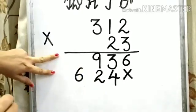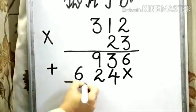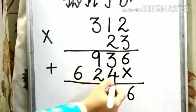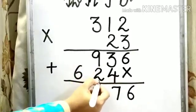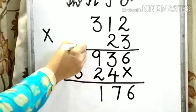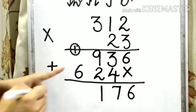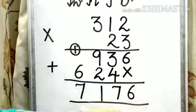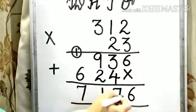Now we need to add these 2 numbers. 6, 3 plus 4 is 7. 9 plus 2 is 11, so write down 1 over here and 1 will be carry. So 1 plus 6 is equal to 7. The product is 7176.